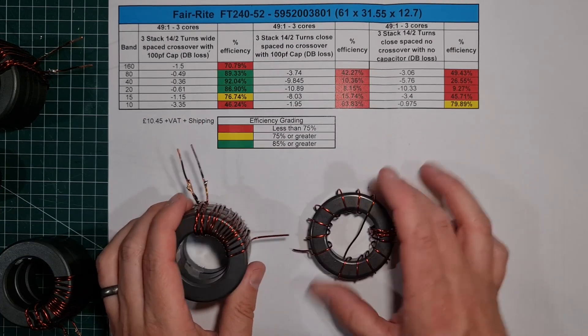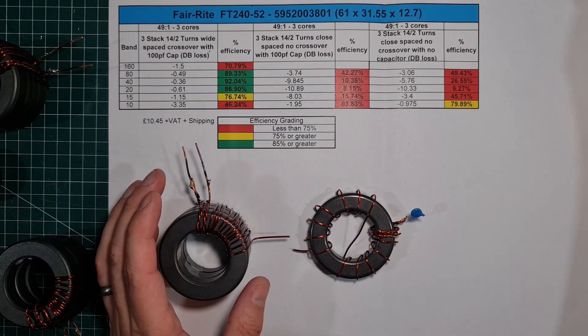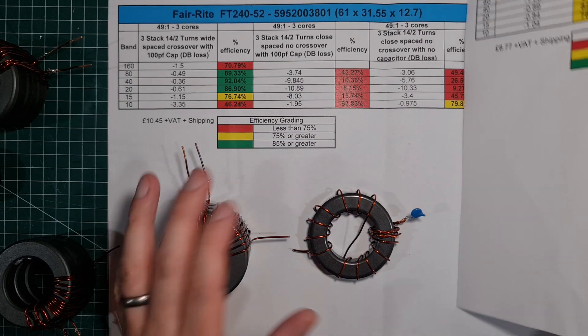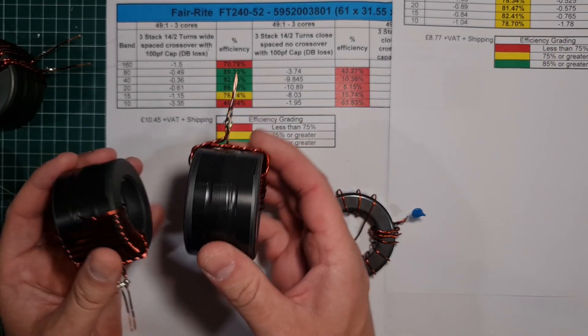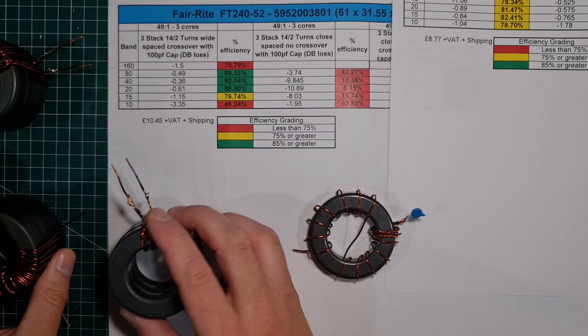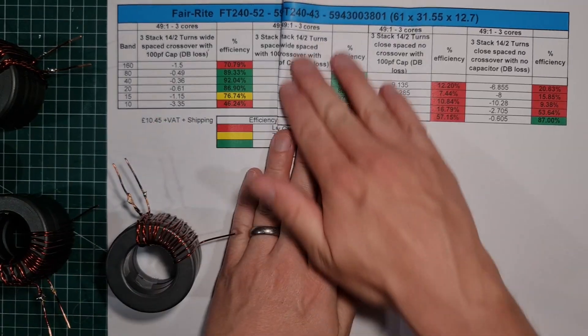So there we go. I mean, there's no such thing as a free dinner. Certainly with these cores, you're not going to have an efficient core for the whole of HF. It's a compromise. So there's your choices, folks.